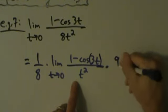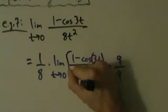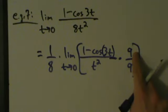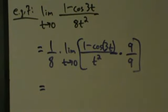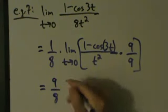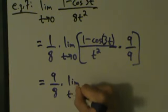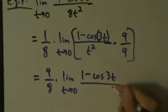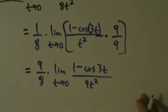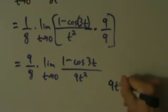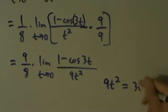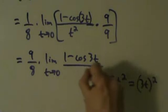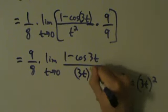Since we want 3t quantity squared, which equals 9t squared, we need a 9 in the denominator. So let's multiply the top and the bottom by 9. The 9 in the numerator is just a constant we can pull out, giving us 9 over 8 times the limit as t approaches 0 of 1 minus cosine 3t all divided by 9t squared. And 9t squared is the same thing as the quantity 3t squared.